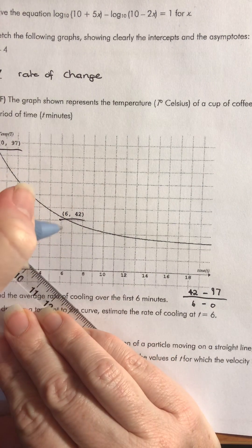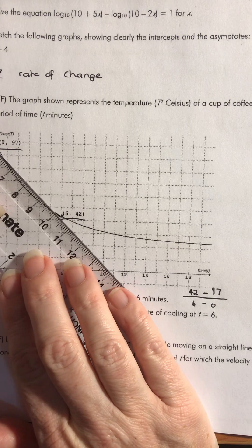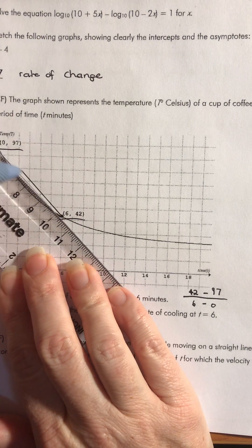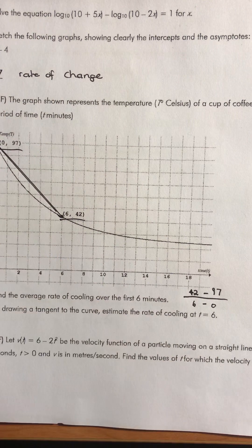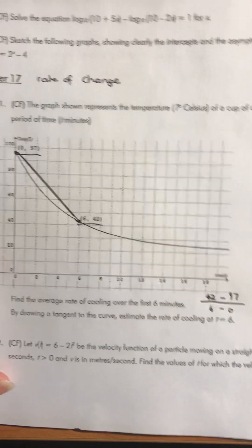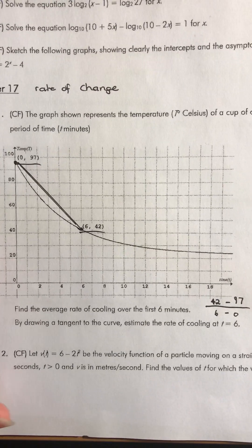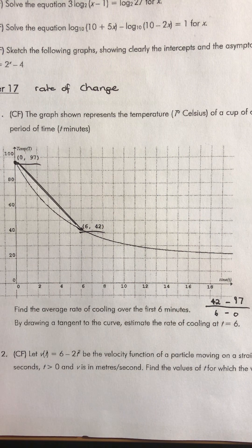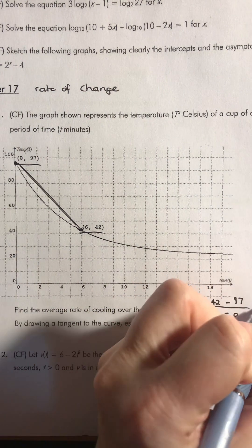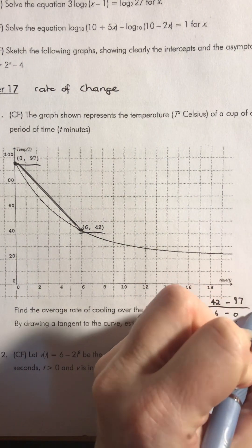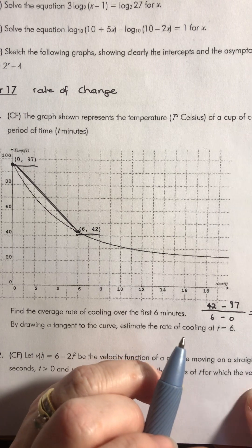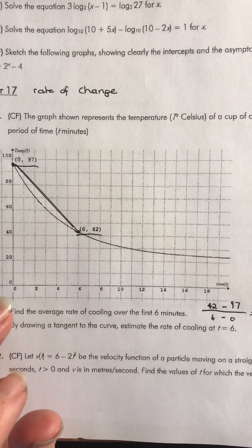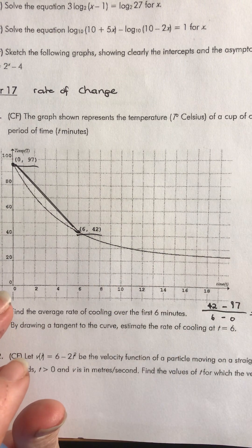It's as if we have got a line there that we've joined up at zero and at six, what we call the secant of the curve. So we've joined that up and we're finding the gradient of that line. So when we do that, we've got 42 take 97, so we get negative 55 over 6.